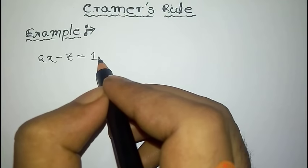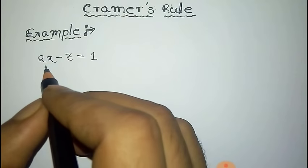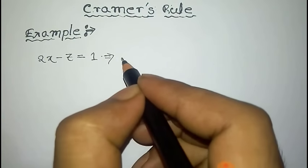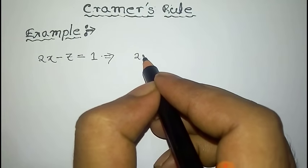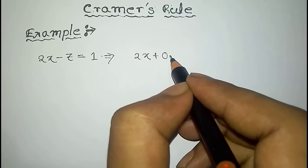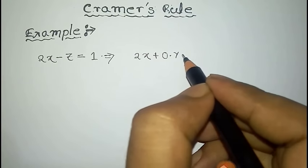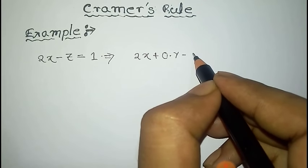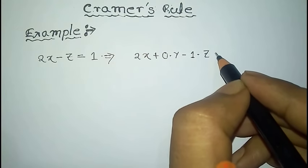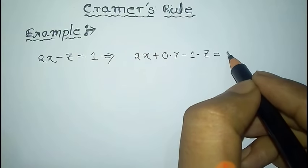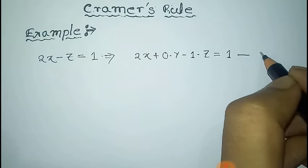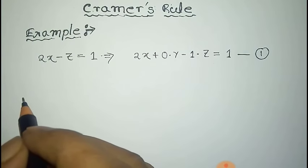The first equation is given by 2x minus z equal to 1. We can write this equation as 2x plus 0 into y minus 1 into z. The purpose of this is to get the coefficient of all the variables. This is the first equation.